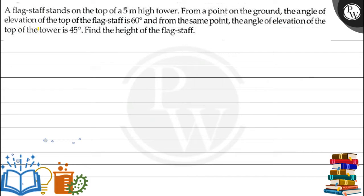Hello, let's see the question. The question says that a flagstaff stands on the top of a 5 meter high tower. From a point on the ground, the angle of elevation of the top of the flagstaff is 60 degrees, and from the same point, the angle of elevation of the top of the tower is 45 degrees. Find the height of the flagstaff.